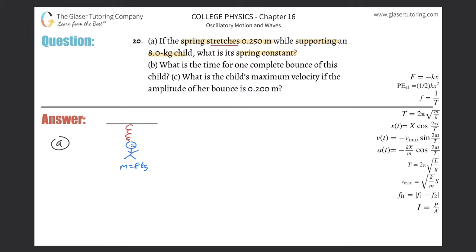What does it mean to stretch 0.25 meters? It doesn't mean the whole length is 0.25. It means that this was the initial unstrained length before the child got on, and when the child got on the spring stretched by 0.25 meters. That's the delta x — the change in displacement from its unstrained state to its strained state is 0.25.